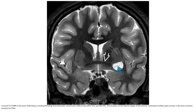T2 image in the same patient shows a small penetrating lenticulostriate vessel lesion. T2 image shows the PVS at the lateral margin of the anterior commissure, which is the most common location for PVS in this region.